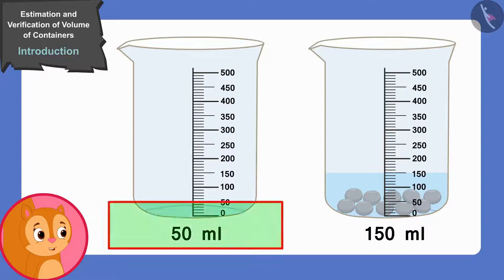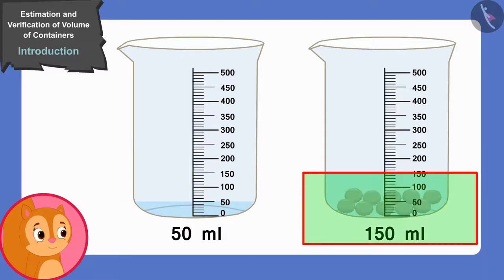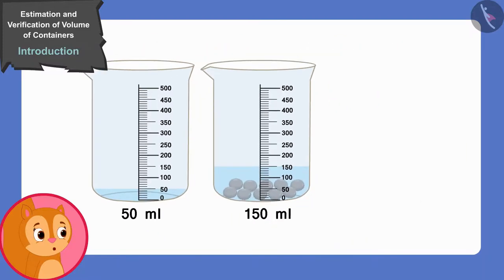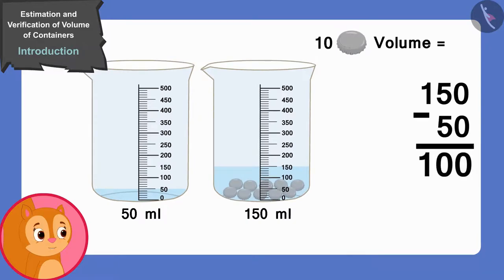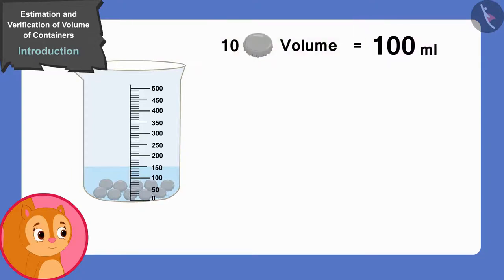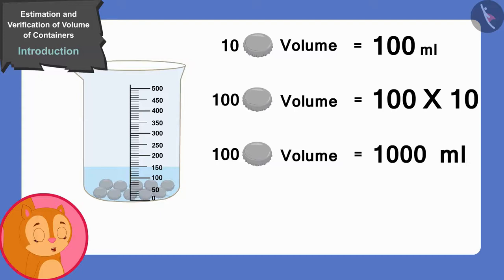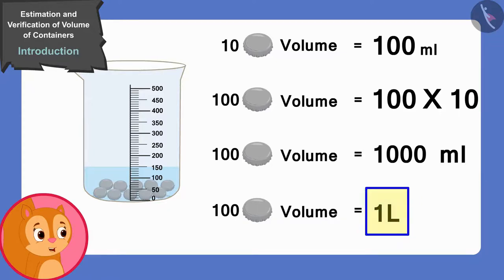First the water level was at 50 milliliters, and now it has risen to 150 milliliters. That means the volume of 10 lids is 100 milliliters. And if the volume of 10 lids is 100 milliliters, then the volume of 100 lids will be 100 multiplied by 10, that is 1000 milliliters or 1 litre.